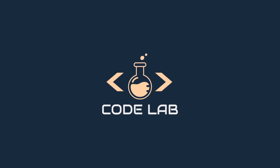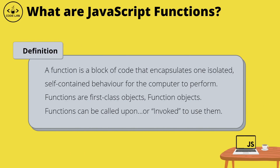So first let's take a look at the definition of a function. A function is a block of code that encapsulates one isolated, self-contained behavior for the computer to perform. In layman's terms, a function is just a block of code that performs a specific task to achieve a desired outcome. The importance and functionality of a function lies in the fact that they create reusable code — instead of copying and pasting the same code throughout different parts of your program, you can write that code inside one function and use it over and over again.